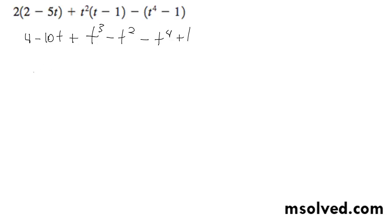So combining terms here, I'm going to get negative t to the fourth plus t cubed minus t squared minus 10t plus 5.